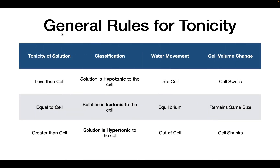The general rules for tonicity are as follows. If the tonicity of the solution is less than the cell, the solution is hypotonic and water will move into the cell, causing it to swell. If the tonicity is equal to the cell, the solution is isotonic and water is in equilibrium, so the cell remains the same size. If the tonicity is greater than the cell, the solution is hypertonic and water will move out of the cell, causing it to shrink.